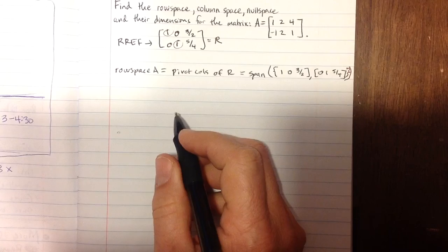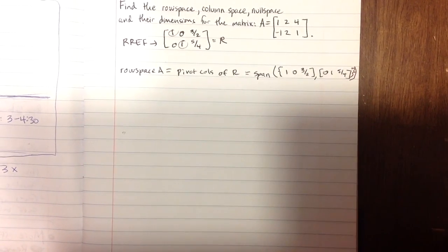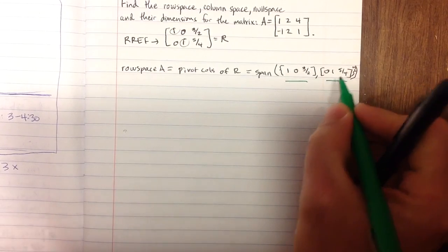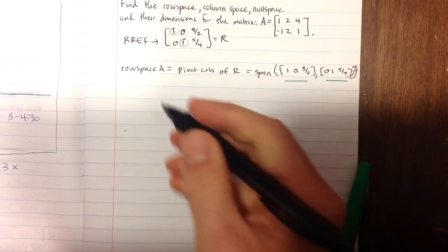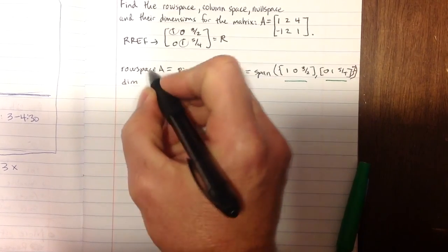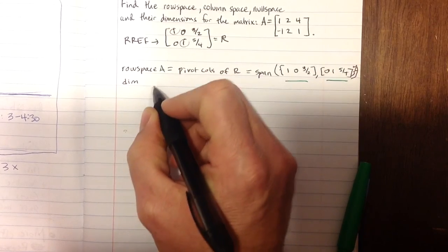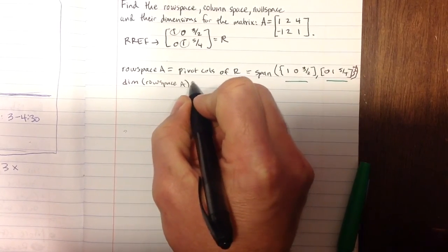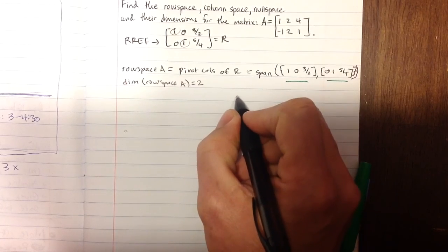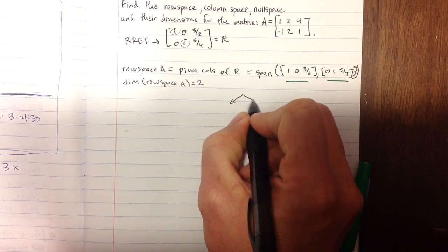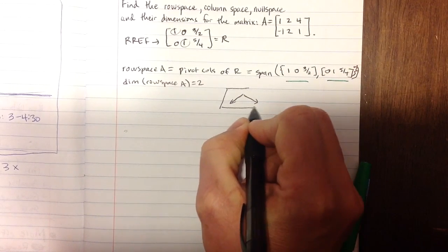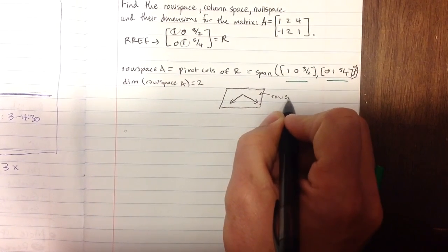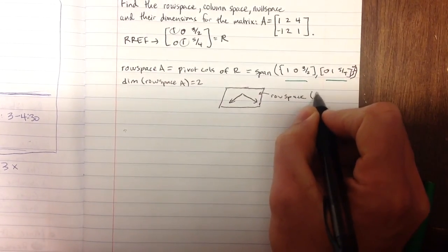You can see that the row space of A is the span of two vectors. These vectors are a basis for our subspace. The dimension of the row space of A is 2. If you think about it graphically, you essentially have two vectors in three space. If you span those, they make up a plane in three space. This is a good representation of the row space of matrix A.